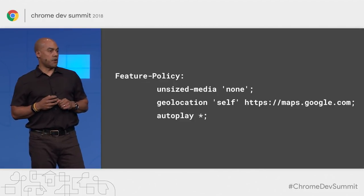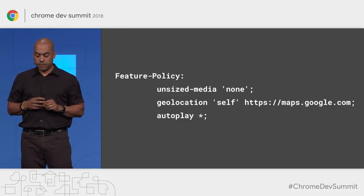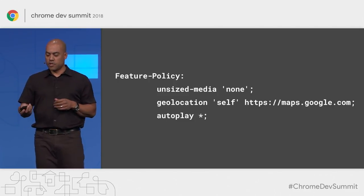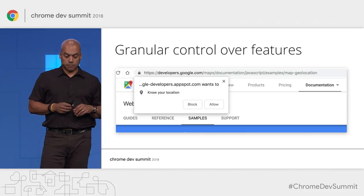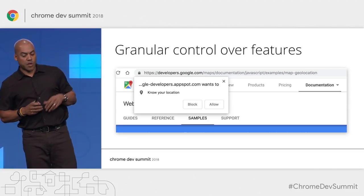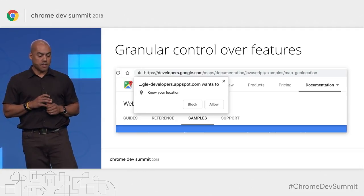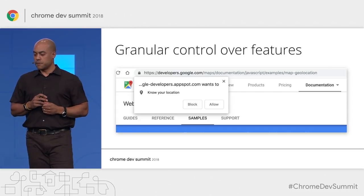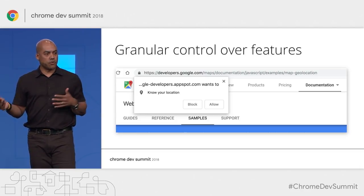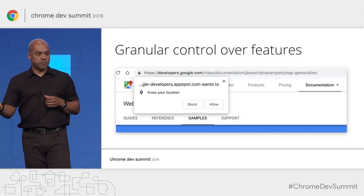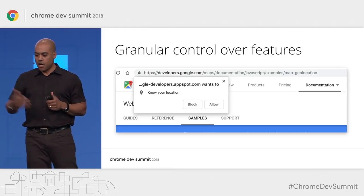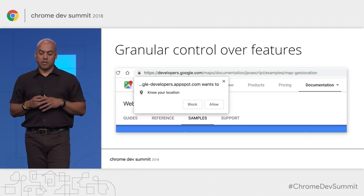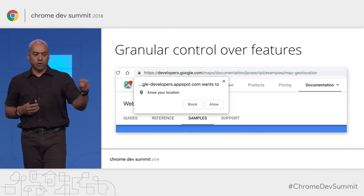Finally, we're allowing any origin to use autoplay using the asterisk keyword, which means essentially everyone. By default, Chrome will only allow autoplay on same-origin iframes. With this policy, we can allow cross-origin iframes to play as well. In that last example, we saw features in the more traditional sense — well-known APIs exposed to the web like geolocation, camera, full screen, and autoplay. We now have policies that give you granular control over the features you use. With feature policy, you can lock this down to either prevent use of a feature entirely, or dole it out to specific origins you trust.